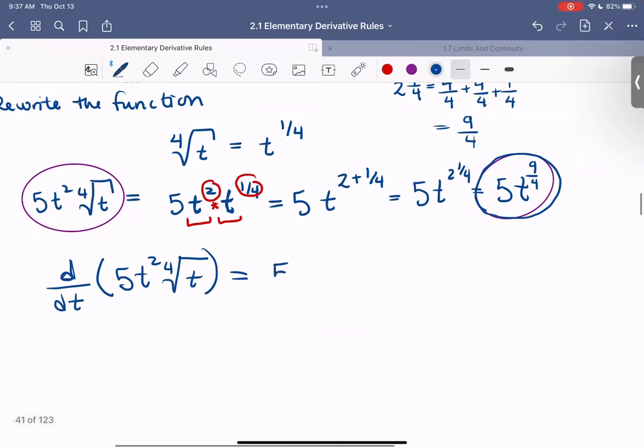We're going to use the constant rule. The constant comes out. We just need to compute the derivative of this t^(9/4). We can recognize that as using the power rule. That exponent, 9/4, is going to come down, and the new exponent will be 9/4 - 1.